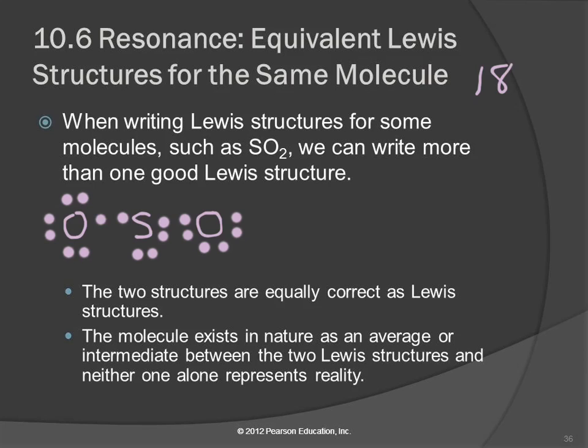Now we have an octet for everybody. Oxygen has 8: 2, 4, 6, 8. Sulfur has 8. And this oxygen also has 8: 2, 4, 6, 8.